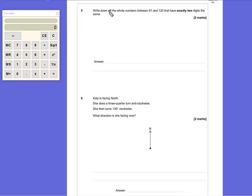Question 5. Write down all the numbers between 99 and 120 that have exactly two digits the same.